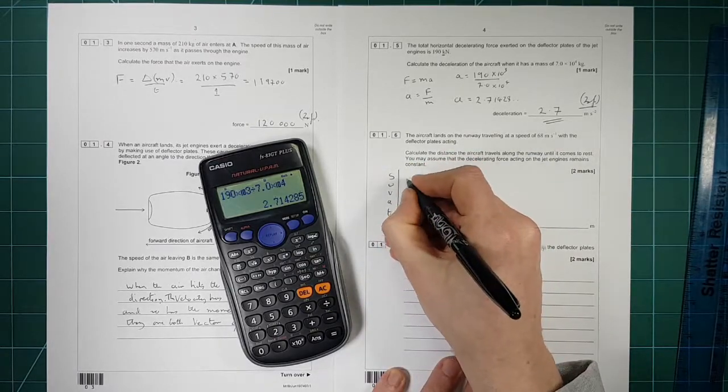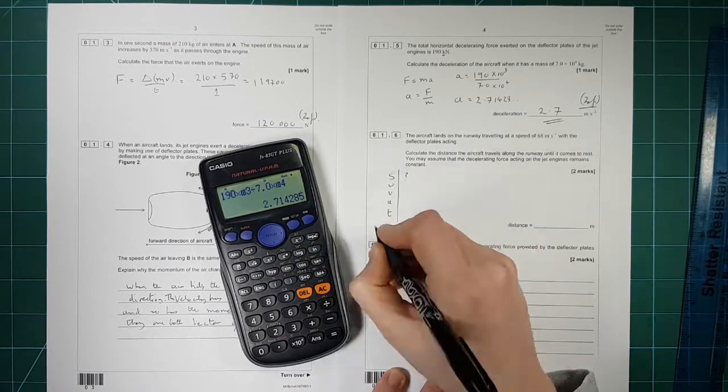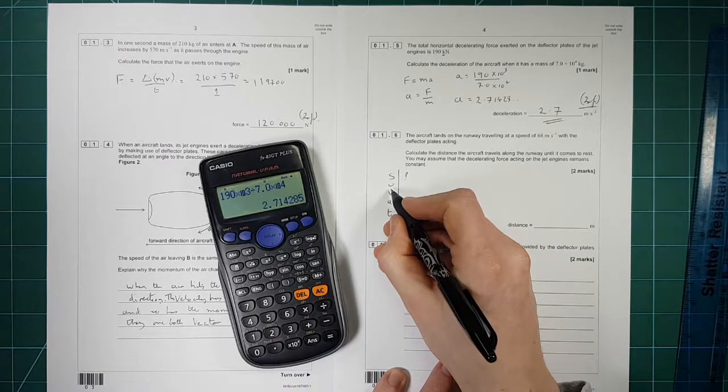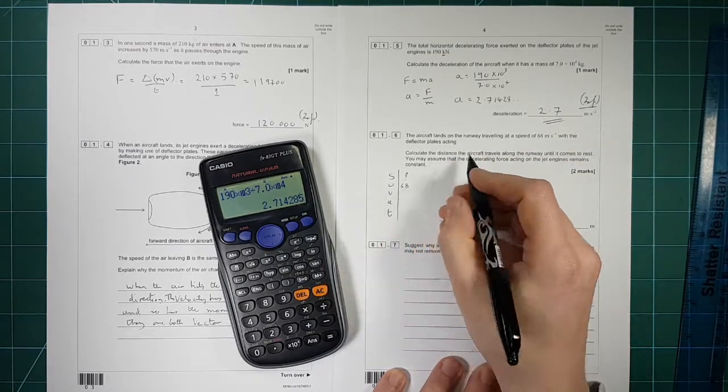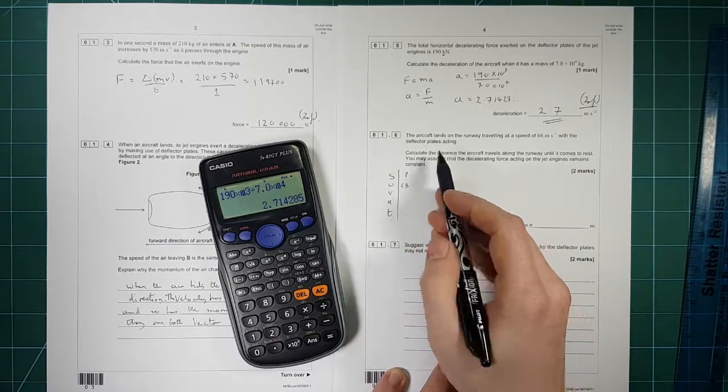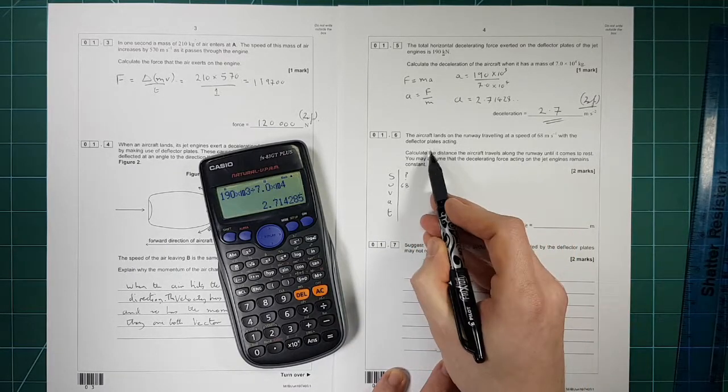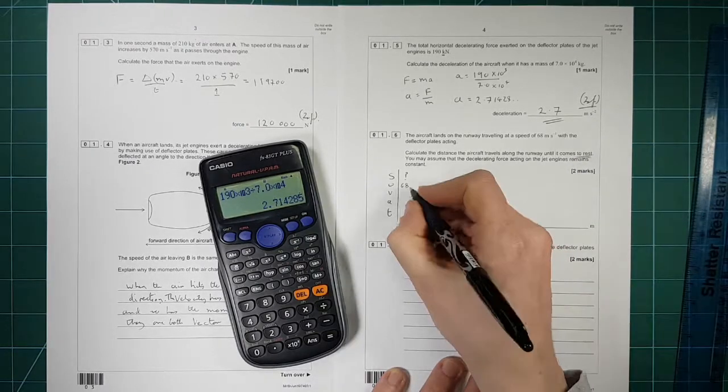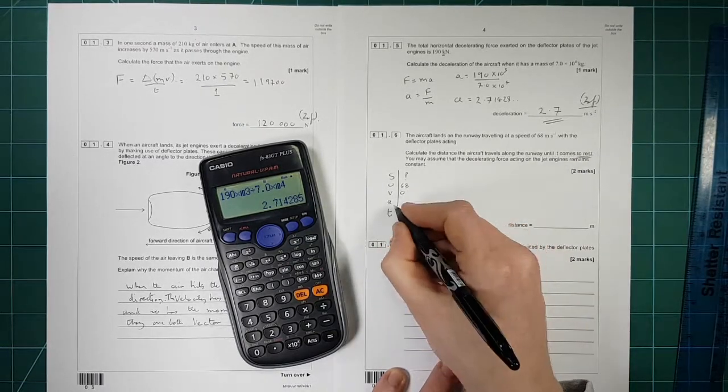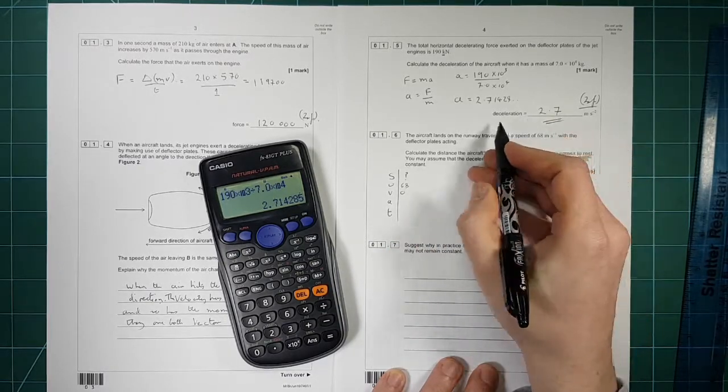Write in what we know. So S is what we're trying to find out. U is the initial velocity. That's 68 metres per second. V is the final velocity. It doesn't say that. Until it comes to rest. There we go. So the final velocity is zero. The acceleration is this. Now we've got to be careful. That was a deceleration.